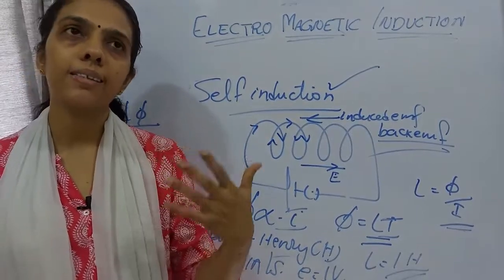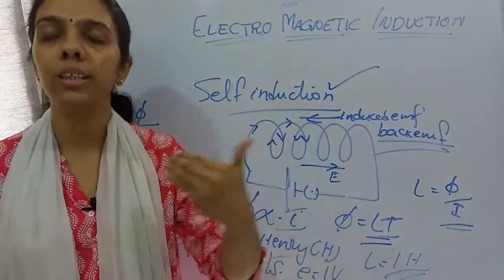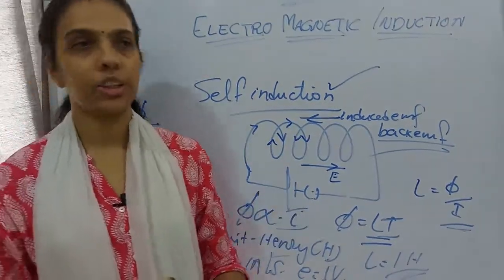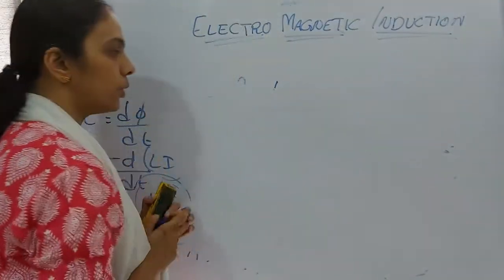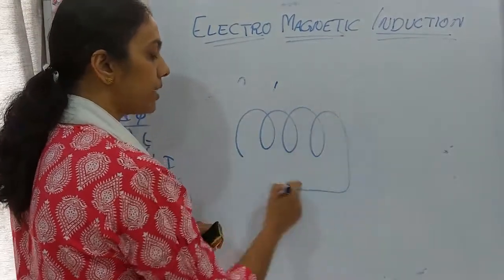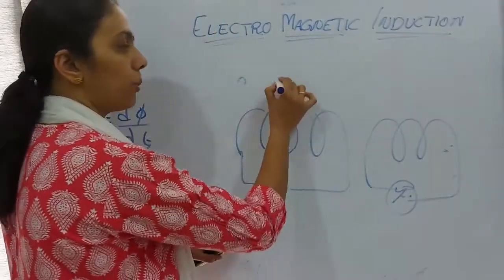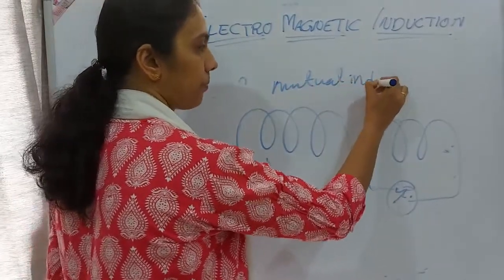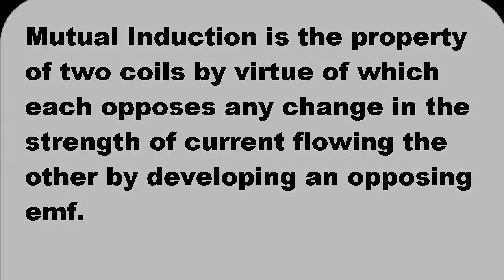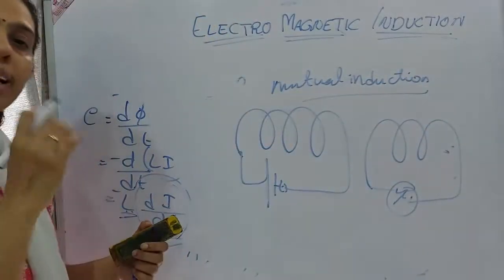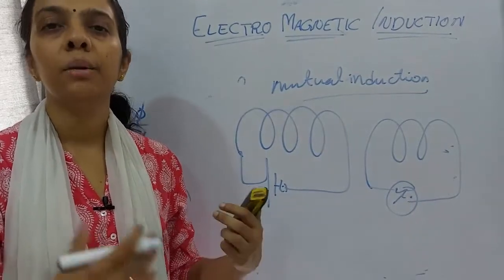Now if we consider two coils — when current in one coil is changing and an EMF is induced in the other coil — this is called mutual induction. So while self-induction involves one coil, mutual induction involves two coils: changing current in one induces an EMF in the nearby coil.